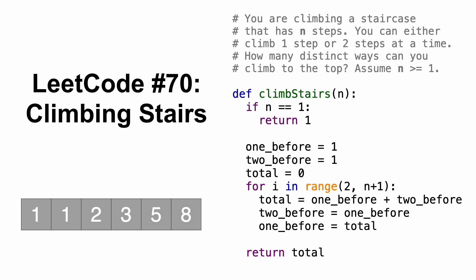In this video, we'll go over LeetCode question number 70, climbing stairs. Here's the question: you are climbing a staircase that has n steps. You can either climb one step or two steps at a time. How many distinct ways can you climb to the top? We'll also assume that n is at least one.